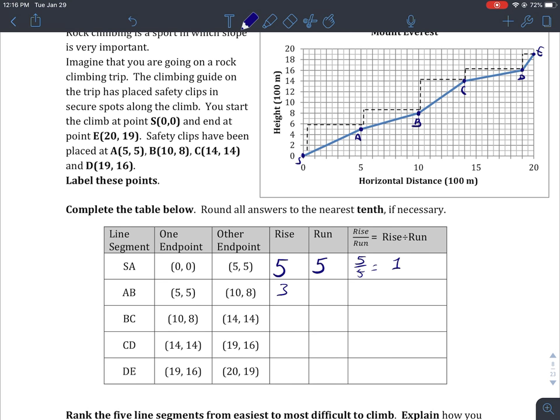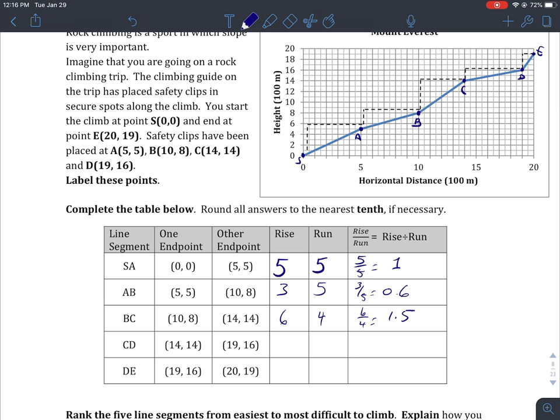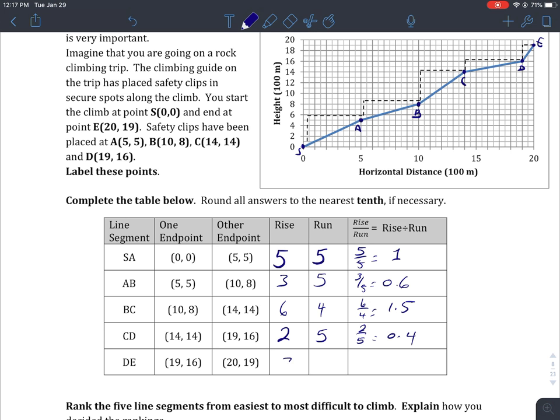We can continue the pattern. Eight minus five is three, ten minus five is five, so three over five is 0.6. Fourteen minus eight is six, fourteen minus ten is four, so six over four is 1.5. Sixteen minus fourteen is two, nineteen minus fourteen is five, so two over five is 0.4. The last one has a slope of three. There's the rise and run all done.